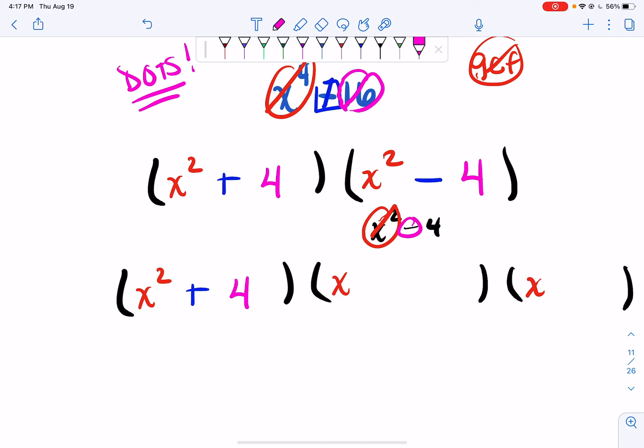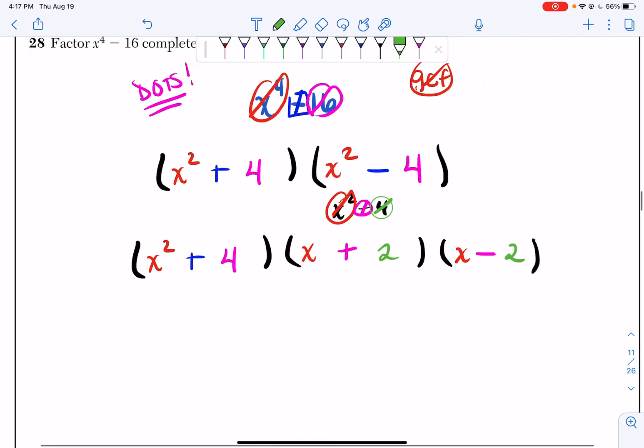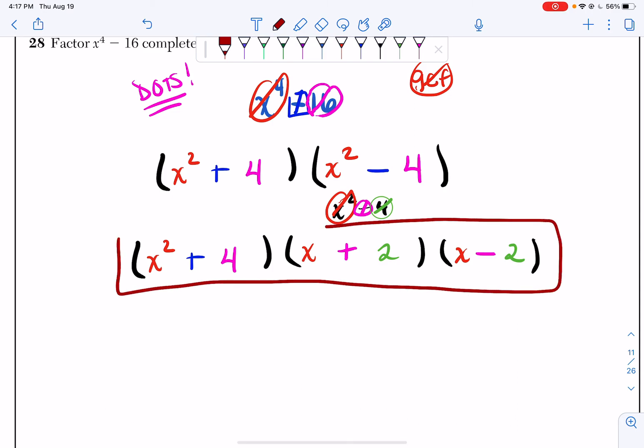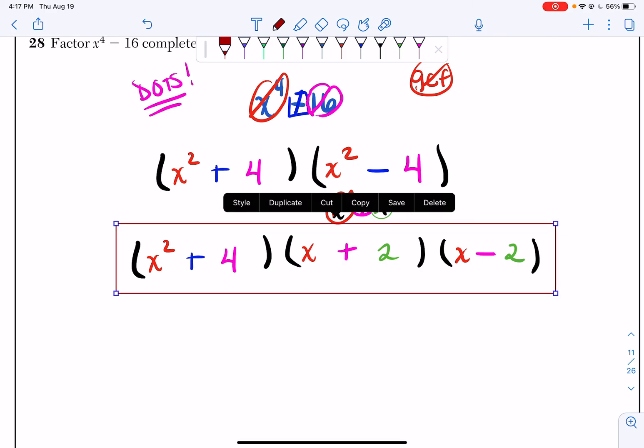Now my minus becomes a plus minus just like before, and now I ask myself what makes 4. Well 2 times 2 is 4. So I have x plus 2 and x minus 2. So my final answer for this problem is x squared plus 4 times x plus 2 times x minus 2. And that's how you factor x to the 4th minus 16 completely.